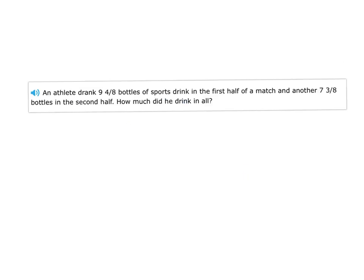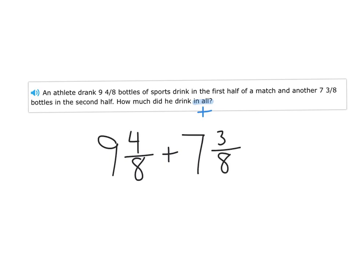An athlete drank nine and four-eighths bottles of sports drink in the first half of a match, and another seven and three-eighths bottles in the second half. How much did he drink in all? 'In all' is addition. Nine and four-eighths plus seven and three-eighths: whole numbers first, nine plus seven is sixteen; fractions next, four-eighths plus three-eighths is seven-eighths.